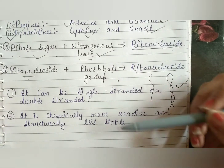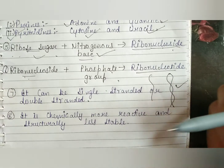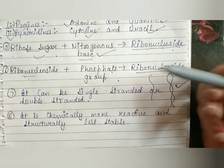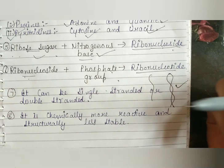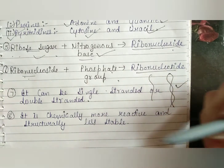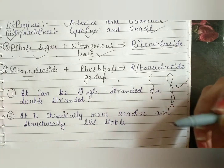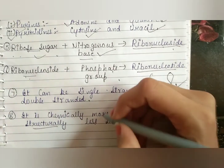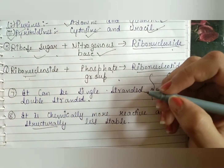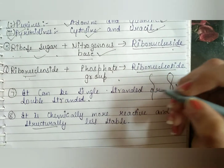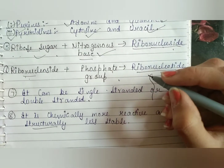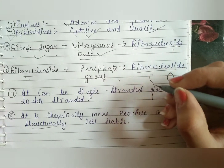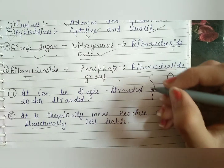RNA is chemically more reactive and structurally less stable. Since RNA also behaves as a catalyst, it depicts that it is chemically more reactive. However, it is structurally less stable, whereas DNA is structurally more stable.